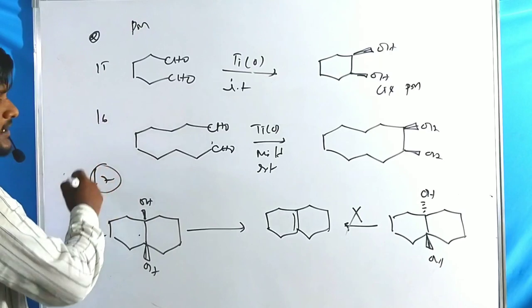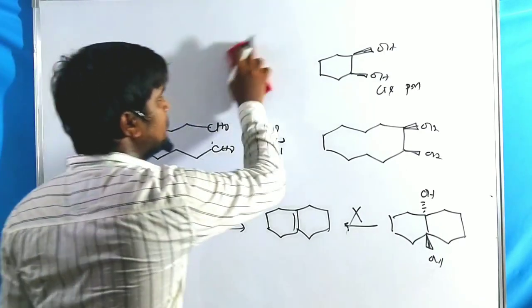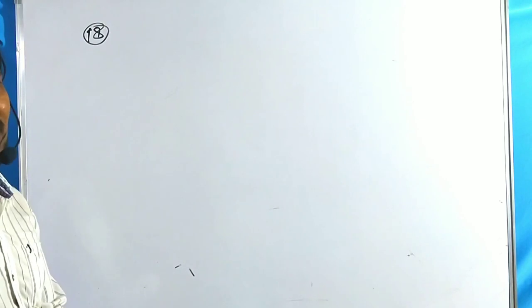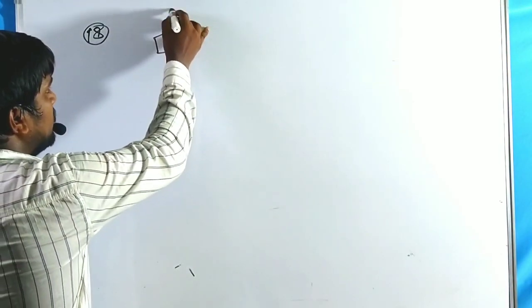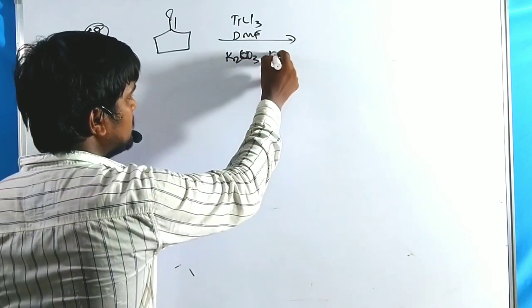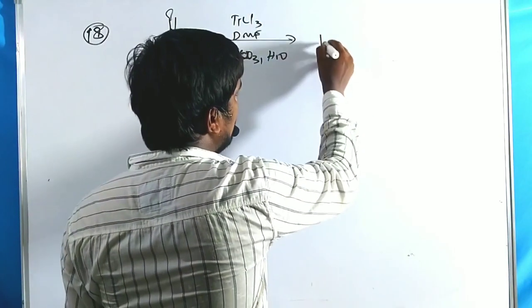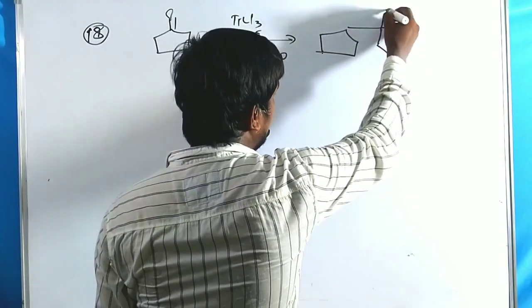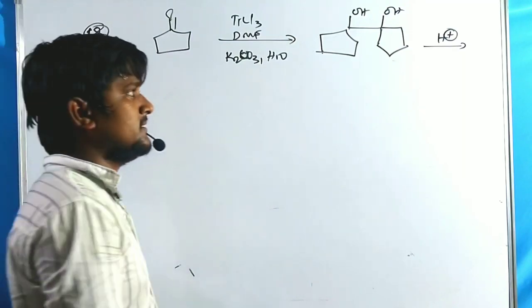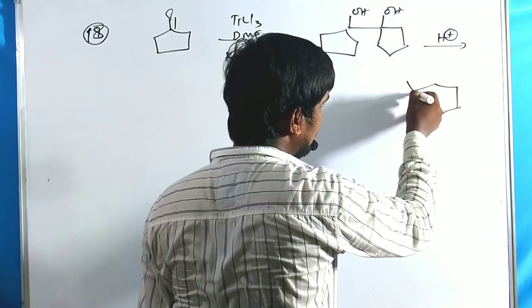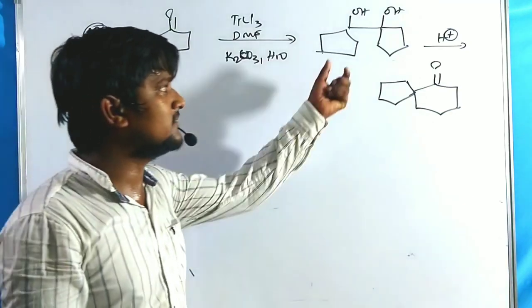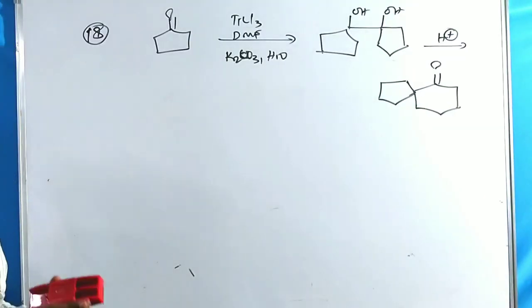The 18th example is from a previous JARM question: cyclopentanone treated with TiCl₃, K₂CO₃ base, and water at low temperature gives pinacols as the major product. These pinacols further undergo pinacol rearrangement in the presence of H⁺ (like H₂SO₄ or HCl) to give a six-membered ring product. We will not elaborate on pinacol rearrangement here.